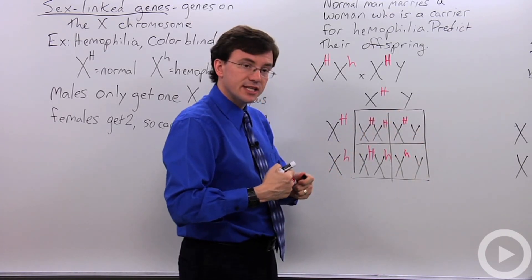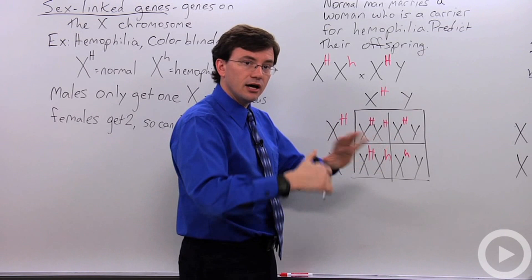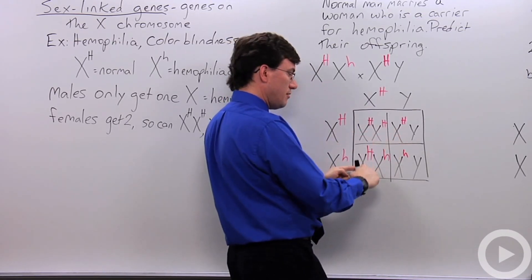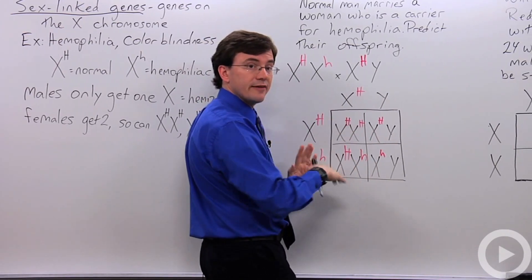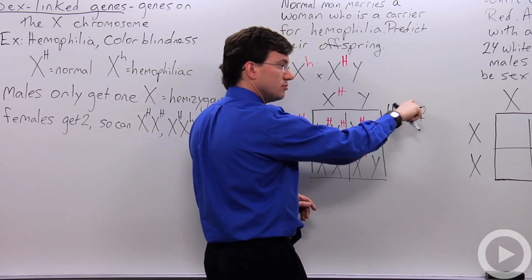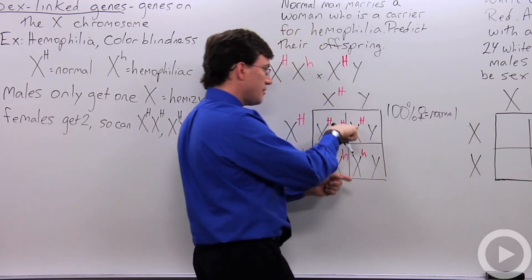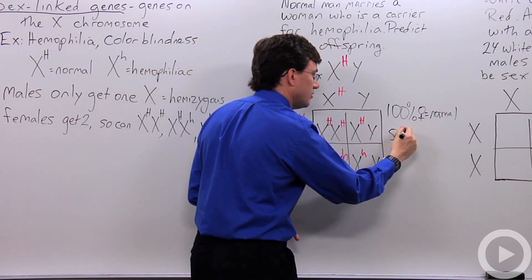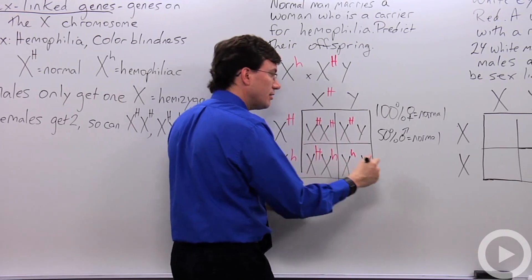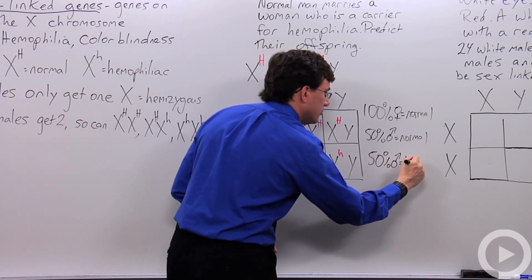With sex-linked traits, the way to spot them is that you'll see unequal expression of the traits in males versus females. Here, both daughters have normal blood clotting — one is homozygous dominant and one is a carrier — so 100% of the females are normal. Meanwhile, 50% of the males are normal and 50% of the males are hemophiliacs.